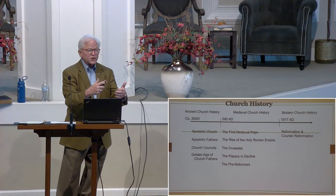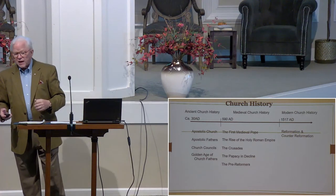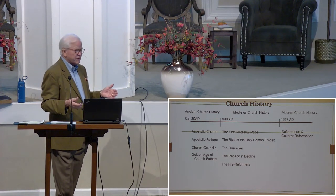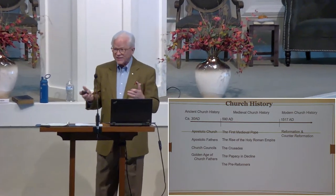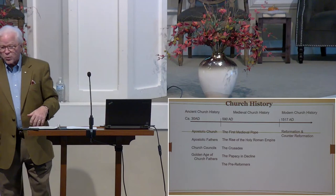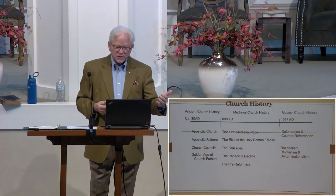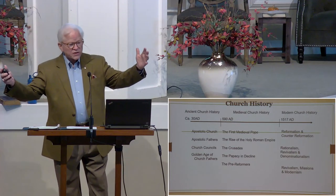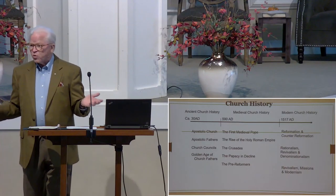Then you come to the 16th century and Martin Luther — we call this modern church history. The Reformation and the Counter-Reformation, which we haven't even mentioned. Rome attempted to answer the Reformation through the Council of Trent. The doctrine firmed there from 1545 to about 1572 has never been changed — whatever they said then, they essentially are saying today. Rationalism, revivalism, and denominationalism arise in the 17th and 18th century. Revivalism, missions, and modernism come from the 19th and 20th century.